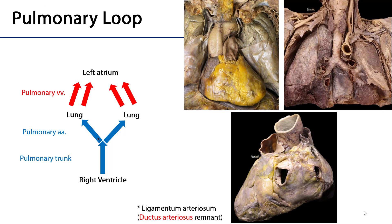Let's start with the pulmonary loop or pulmonary circulation. Pulmonary circulation begins in the right ventricle. That blood is sent through the pulmonary valve to the pulmonary trunk, which divides into right and left pulmonary arteries. Those pulmonary arteries are going to follow the pathway of the tracheobronchial tree out towards the alveoli and feed into capillary beds that surround the alveoli for the purposes of gas exchange.